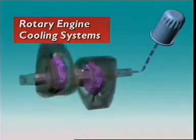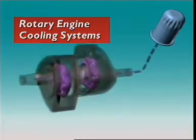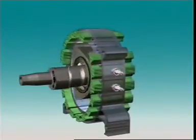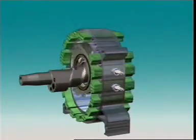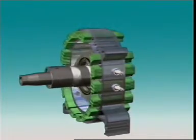In a rotary engine, the rotors are cooled by oil from the lubricating system. Each housing, however, is water-cooled, and there are additives in the coolant to protect the housing alloys from corrosion.